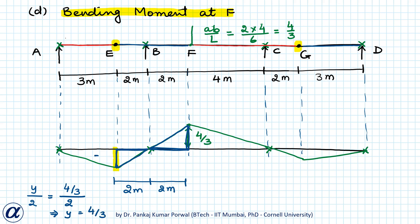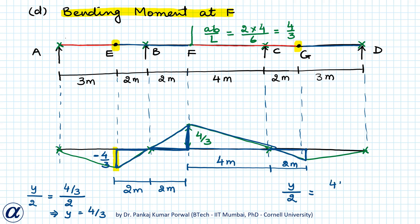For vertical displacement of G, using similar triangles with distances of 4 meters and 2 meters: y/2 = (4/3)/4, giving y = 2/3 units. Because this is in the downward direction, it will have a minus sign, so G has displacement −2/3. This is the influence line diagram for bending moment at F with magnitudes at all key points.